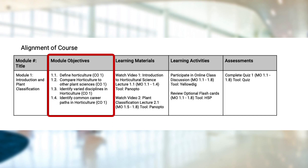Module objectives state what your students will be able to do when they complete that module. They should align with course objectives and be more specific. This instructor has noted this alignment by including the course objective number in parentheses.